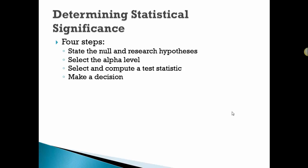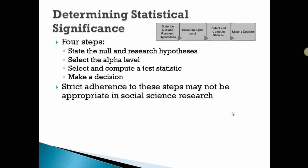In your book, we're going to use four steps. We're going to identify or state the null and alternative or the null and research hypothesis, select the alpha level, select and compute a test statistic, and then make a decision. There's a little graphic from your book that's nice to help you see that. Strict adherence to these steps may not be appropriate in all social science research.